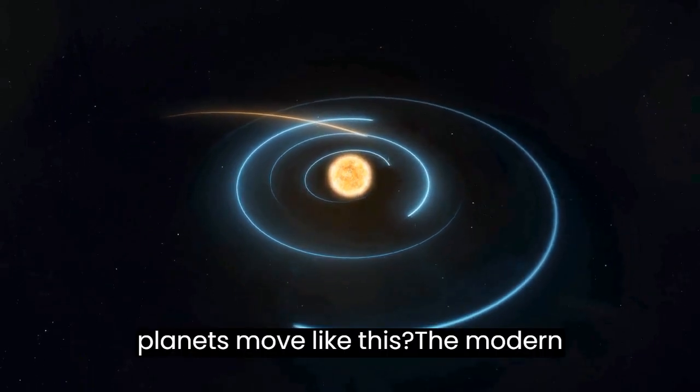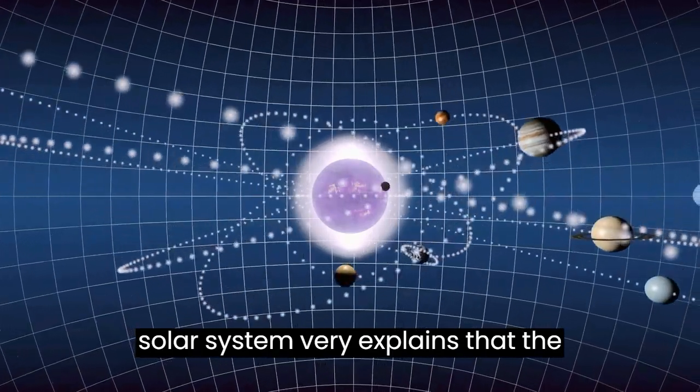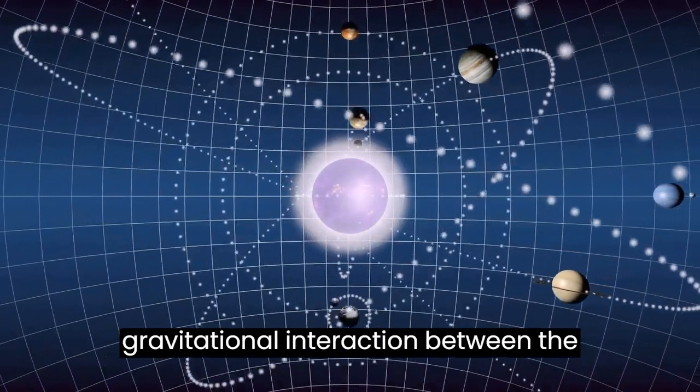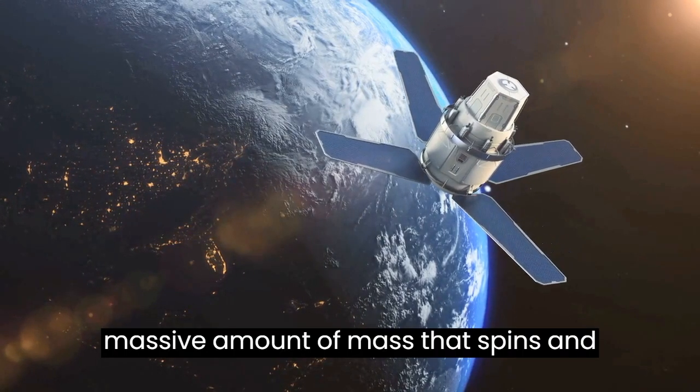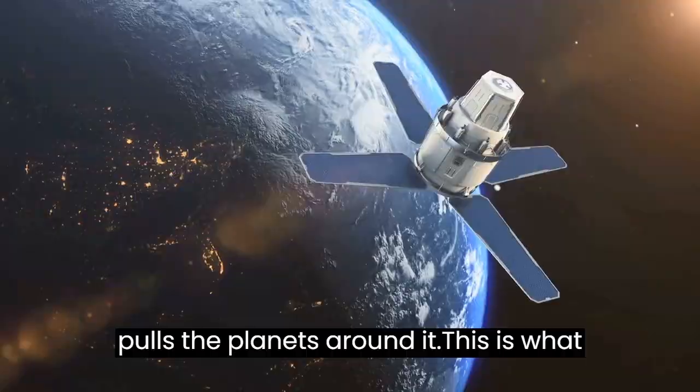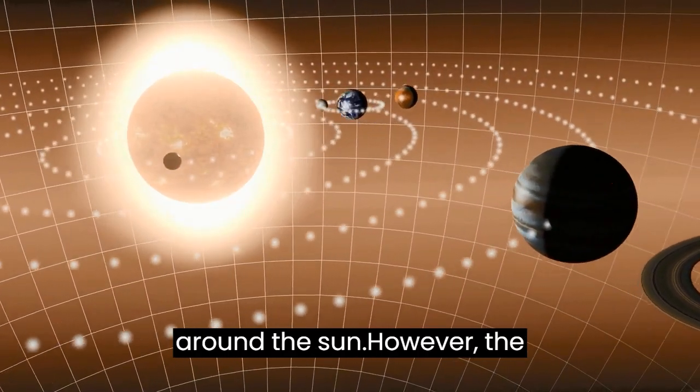But why do the planets move like this? The modern solar system theory explains that the motion of the planets is caused by the gravitational interaction between the planets and the sun. The sun has a massive amount of mass that spins and pulls the planets around it. This is what causes the planets to move in orbit around the sun.